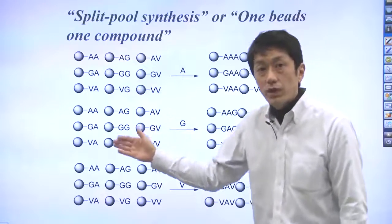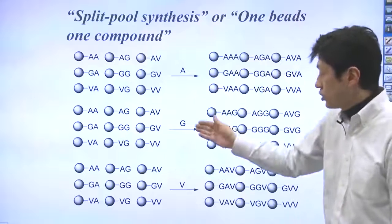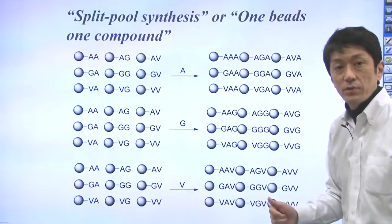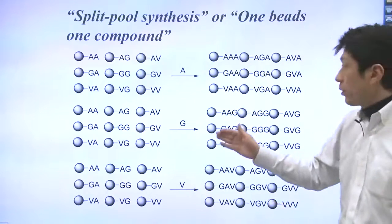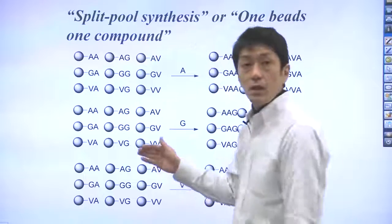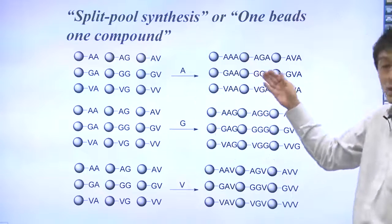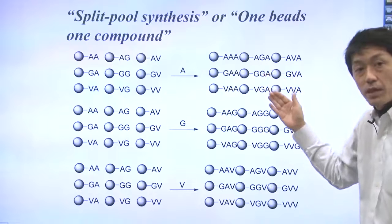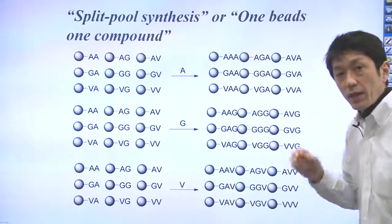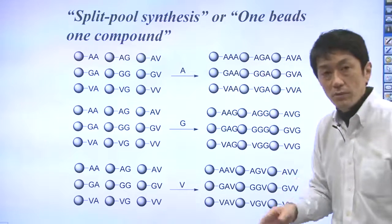They are allowed to react with A, G, V again respectively. At this point, 27 different peptides have been generated, as the cube of three is 27.